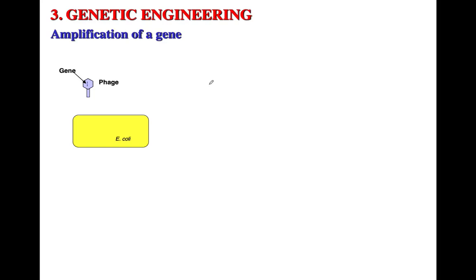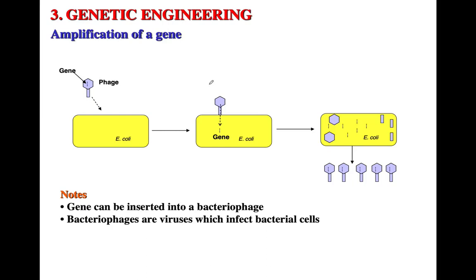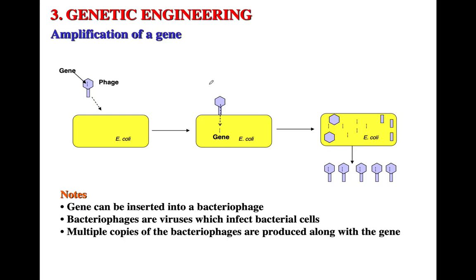Bacterial phages are specific viruses that infect bacteria. It is possible to introduce a gene into a phage; that phage then infects the bacteria, and the bacterial machinery produces the genes we need. Multiple copies of the bacteriophage are produced as it takes over the cellular machinery of the bacteria to generate multiple copies of that gene.